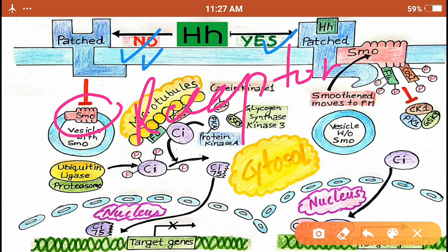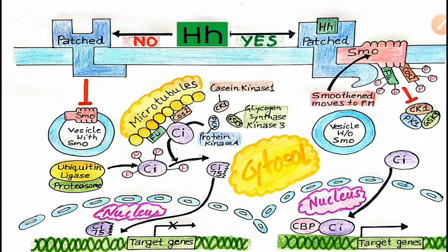Initially in the absence of the ligand, this Patched protein, which is the receptor here, is actually inhibiting the signal transducing protein Smoothened or SMO, which is present in the vesicle. Like in the Wnt pathway, there was a central player around which the whole pathway was based.